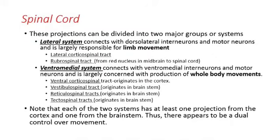These projections can be divided into two major systems. The lateral system connects with dorsolateral interneurons and motor neurons, and is largely responsible for limb movement — you can think 'lateral, limb,' they both start with L. The ventromedial system connects with ventromedial interneurons and motor neurons, and is largely concerned with producing whole body movements or trunk movements.